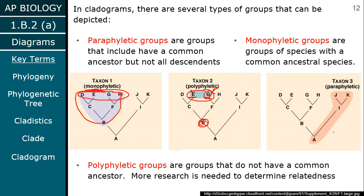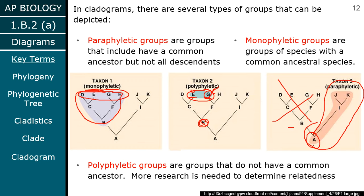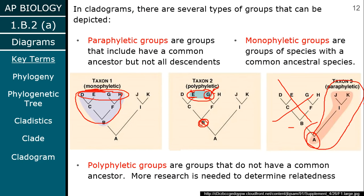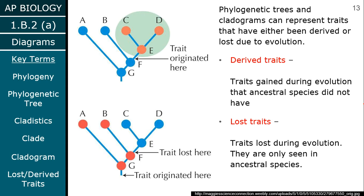A paraphyletic group is where you take a common ancestor — in this case A — and look at some but not all of its descendants. We don't care about all of these other ones. We don't really need to use these terms that often for this class, but basically how you look at those organisms on phylogenetic trees matters.